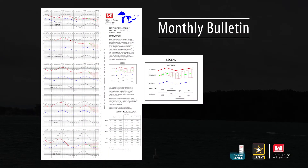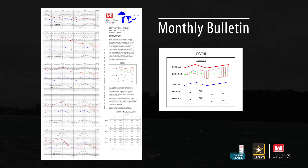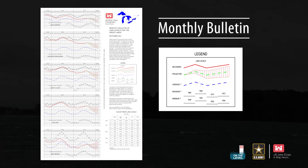In looking at the Bulletin, you will see a six-month forecast of Great Lakes water levels and other water level statistics. All water levels are shown as still water, monthly mean surface elevations, or water elevations undisturbed by wind or wave action.